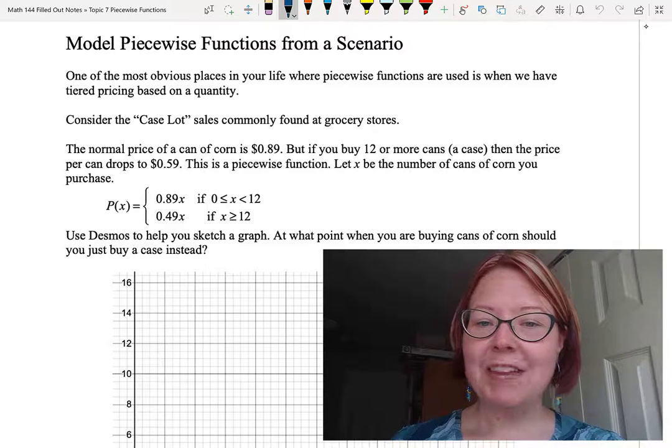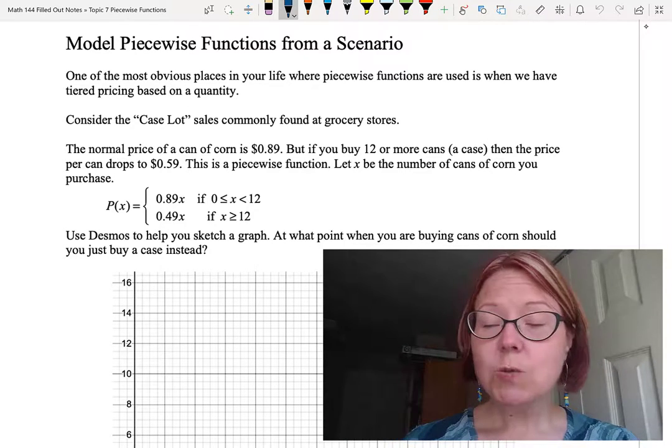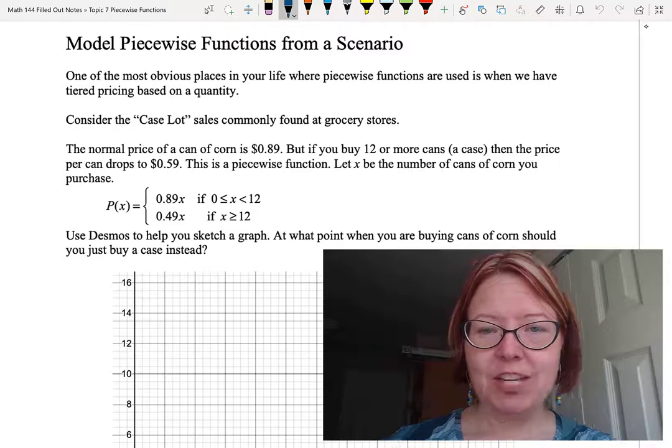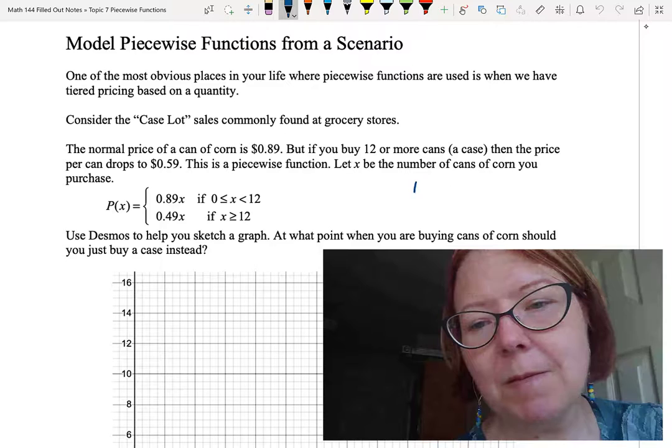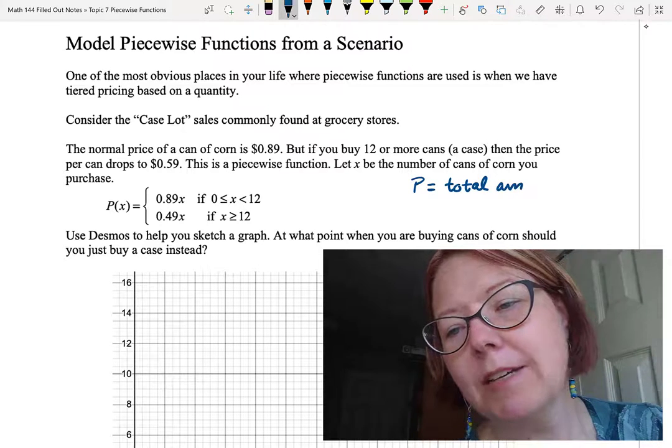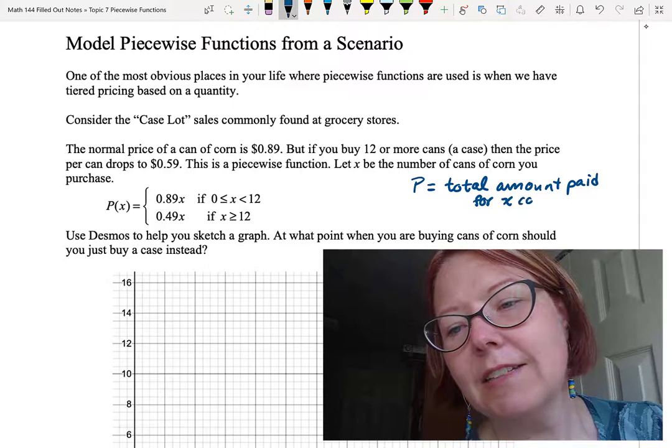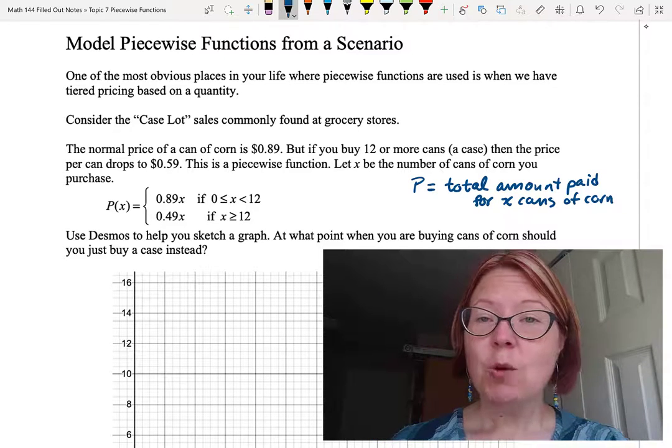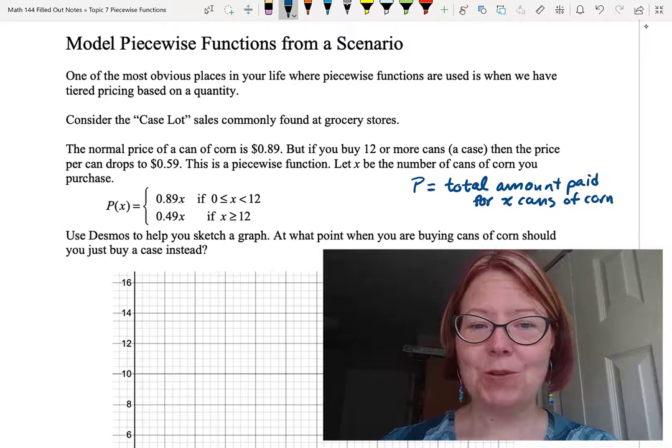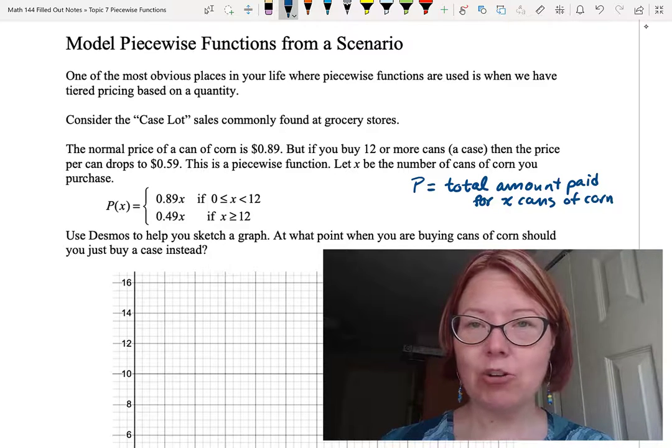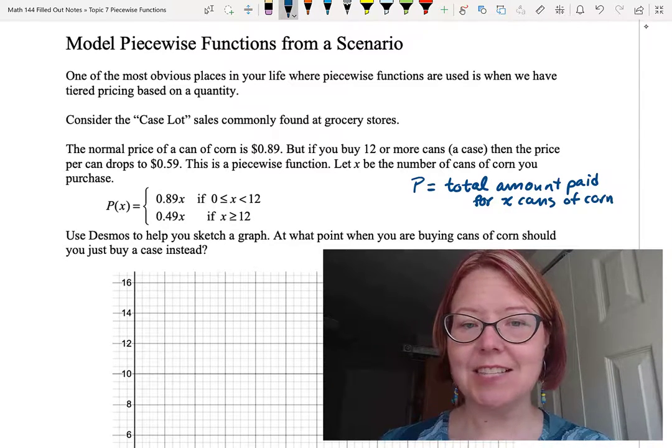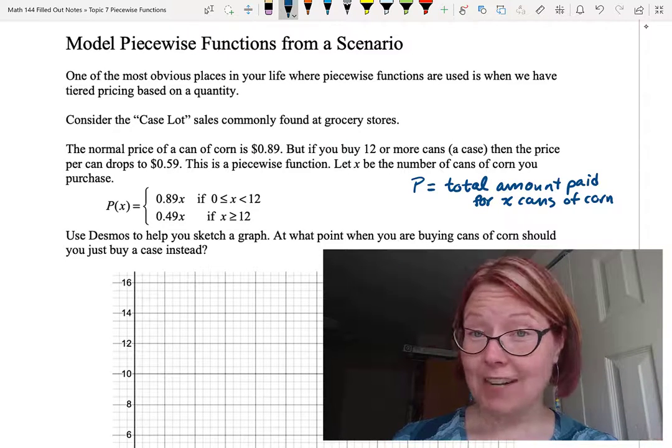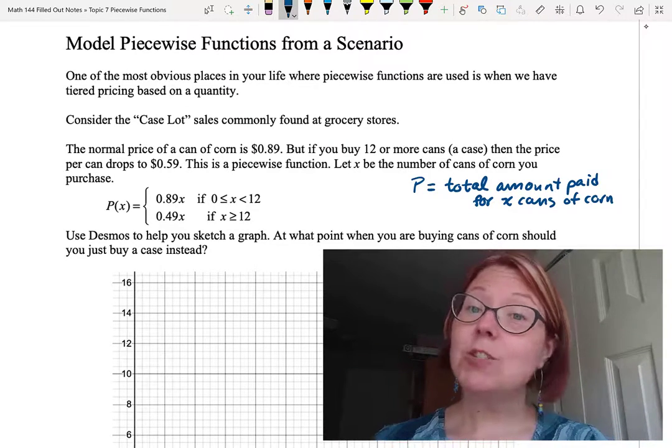Let's let X be the number of cans of corn that you purchase. So we can write this as a piecewise function. We'll let capital P be the total amount paid for X cans of corn. This piecewise function is made up of two pieces. It's 0.89 times X if 0 is less than or equal to X is less than 12. And then the second piece is 0.49X if X is greater than or equal to 12.